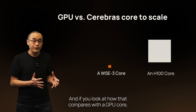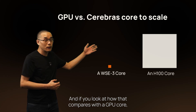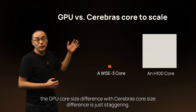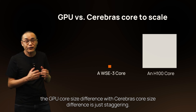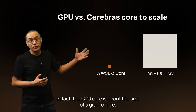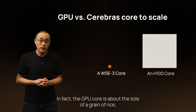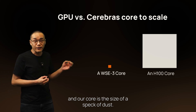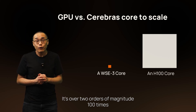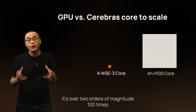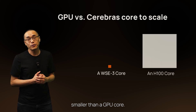If you look at how that compares with a GPU core, the size difference is just staggering. In fact, the GPU core is about the size of a grain of rice, and our core is the size of a speck of dust. It's over two orders of magnitude — a hundred times smaller than a GPU core.